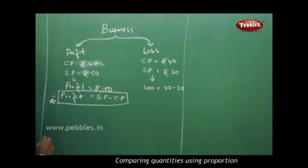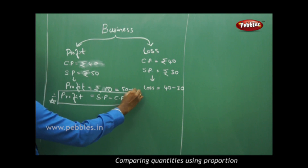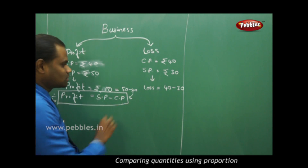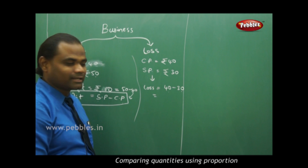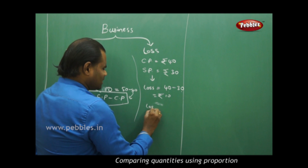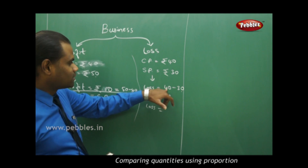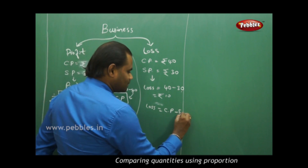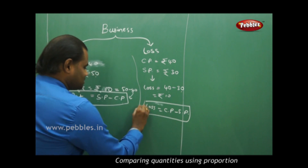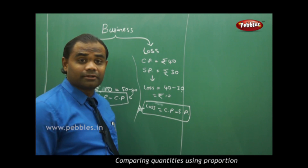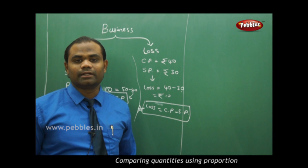In the profit case, I got 10 by subtracting 50 minus 40 — selling price minus cost price gives profit. In the loss case, I get 10 by taking 40 minus 30 — cost price minus selling price gives loss. Therefore, profit = SP − CP and loss = CP − SP. This is how I understand the difference between profit and loss.